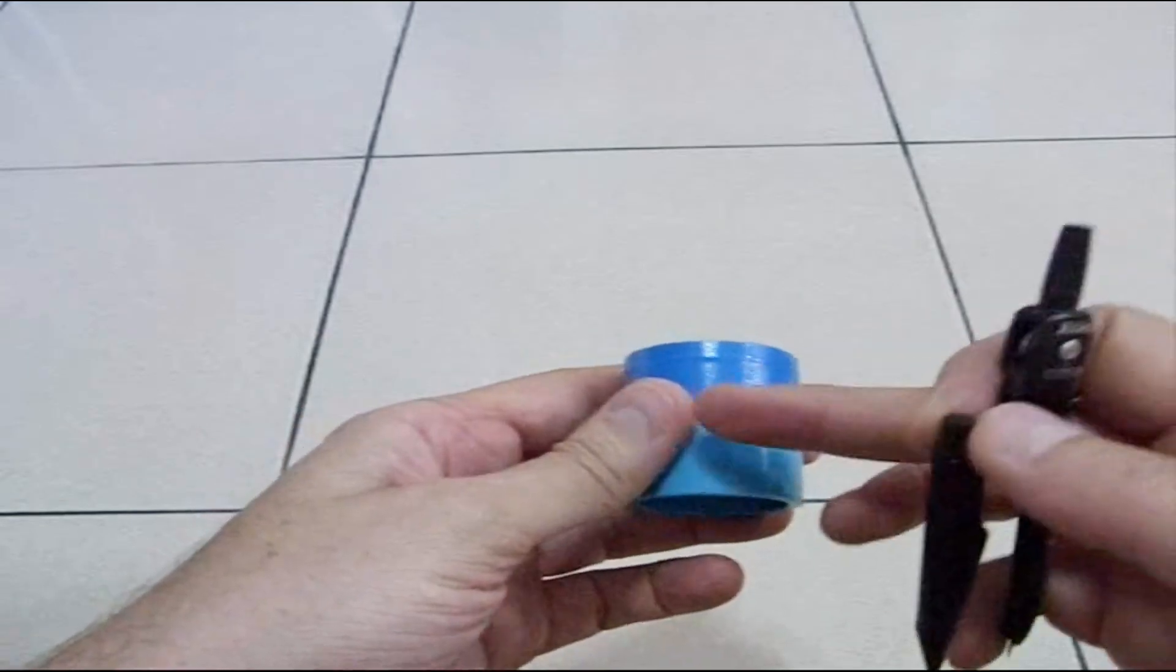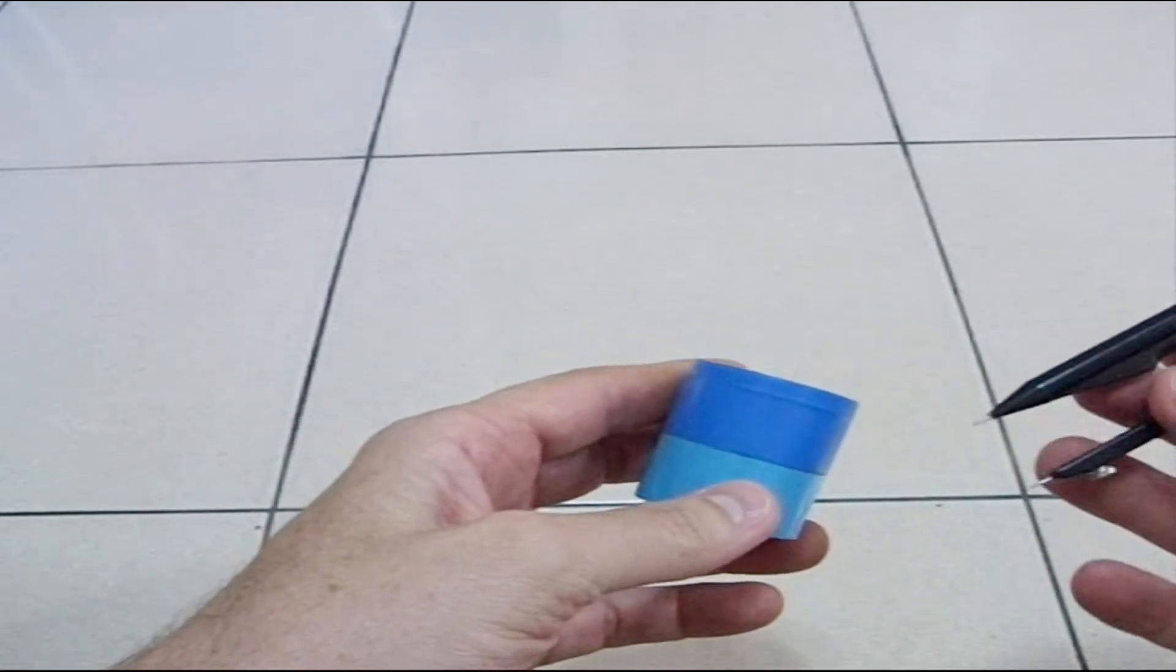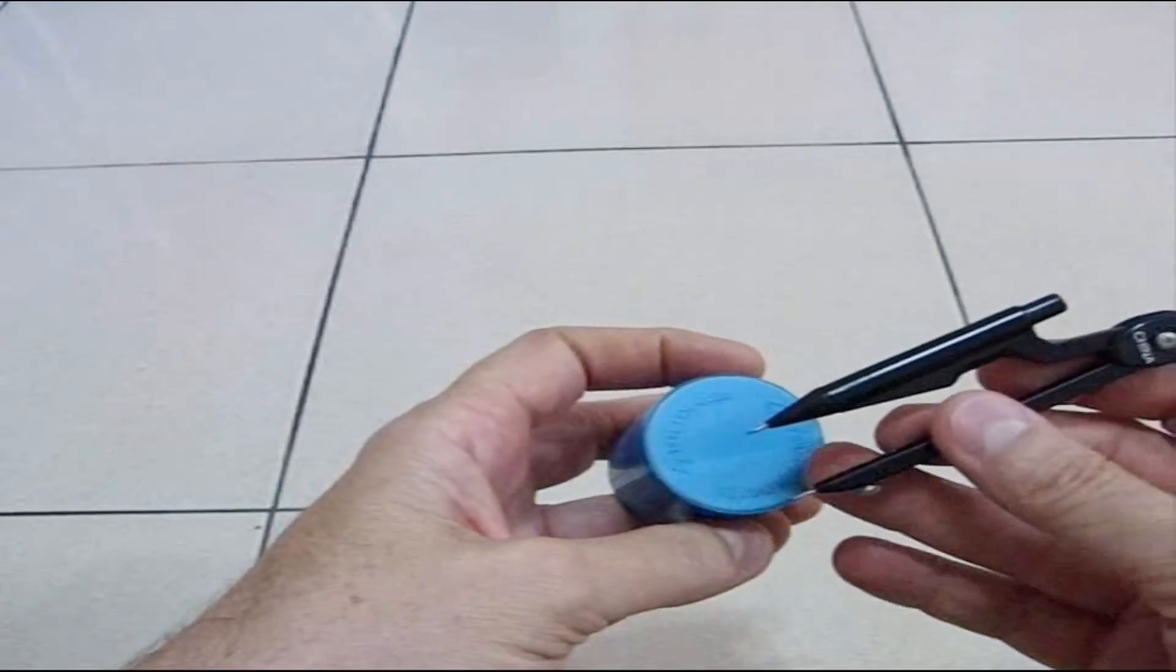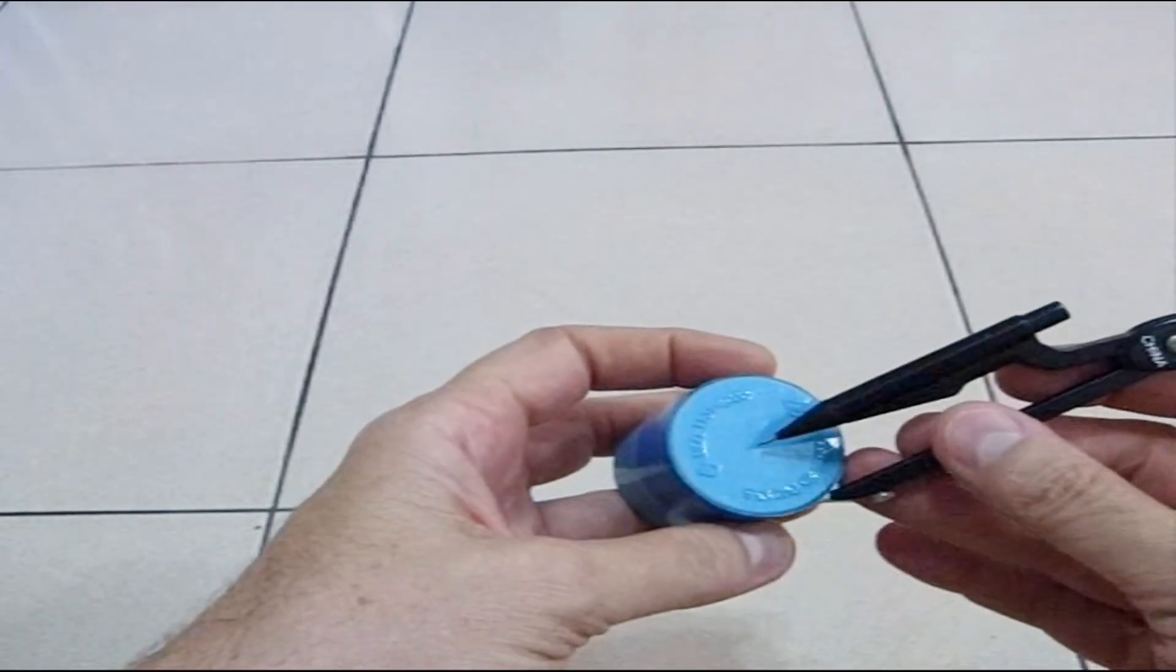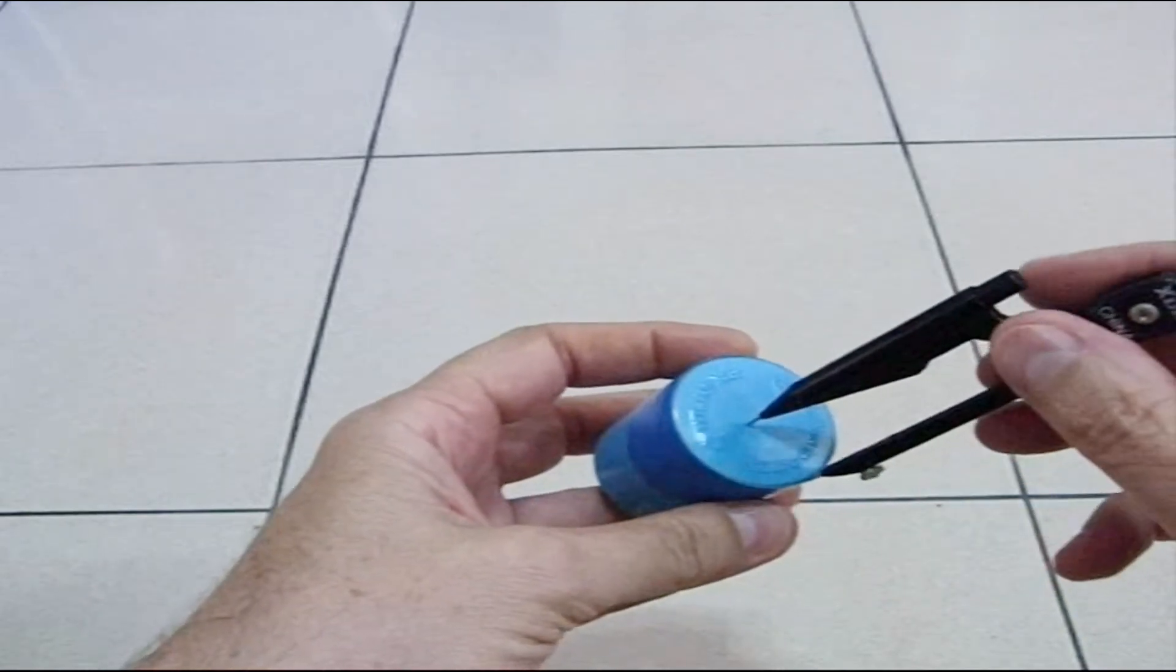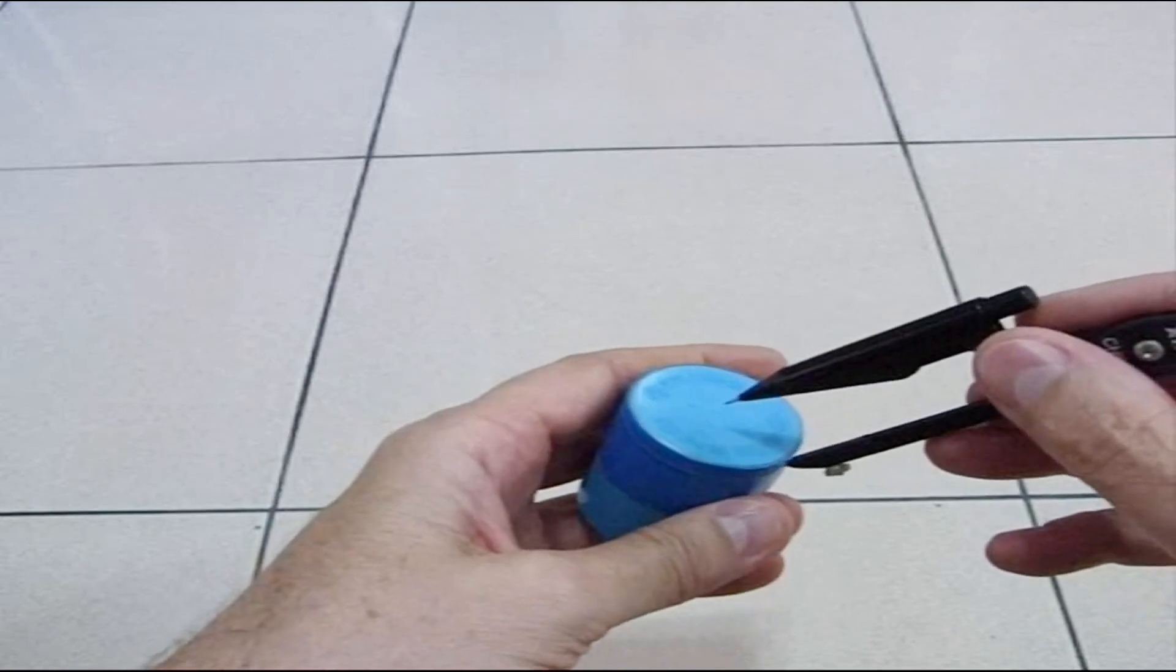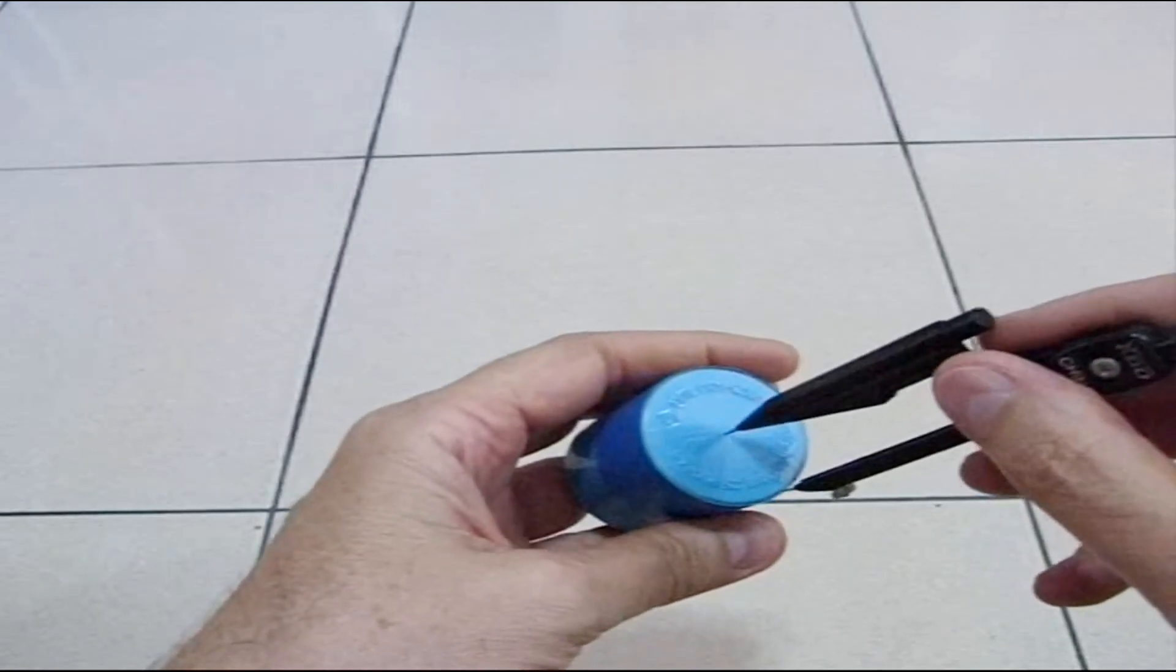So what I do is I start out by putting a piece of duct tape around the outside. You can use other types of tape but duct tape works. You get a compass and you set it roughly to where you think the center of it might be. And you make a mark. You move it over a little bit. Make another mark.